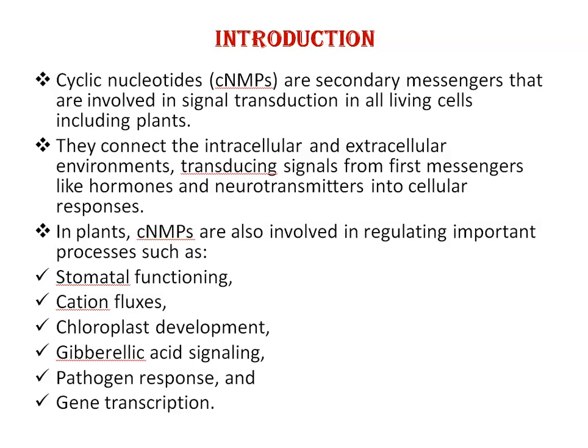Cyclic nucleotides, such as 3,5-cyclic adenyl monophosphate and 3,5-cyclic guanyl monophosphate, are secondary messengers involved in signal transduction in all living cells, including plants. They connect the intracellular and extracellular environments, transducing signals from first messengers like hormones and neurotransmitters into cellular responses. In plants, cyclic nucleotides are also involved in regulating important processes such as stomatal functioning, cation fluxes, chloroplast development, gibberellic acid signaling, pathogenic response, and gene transcription.